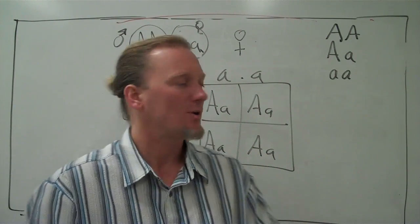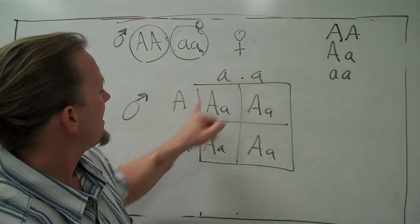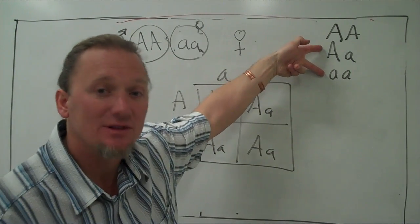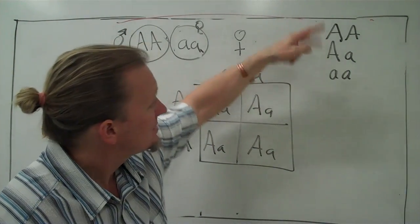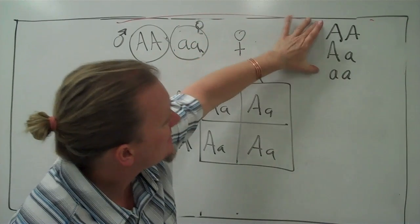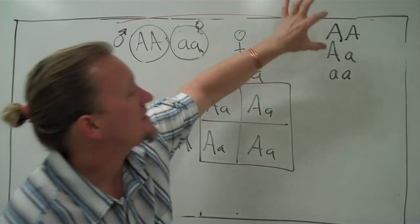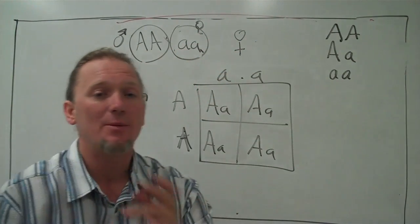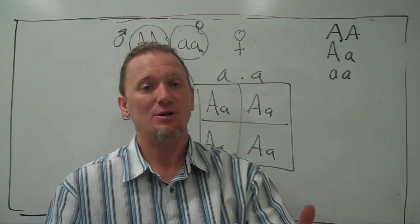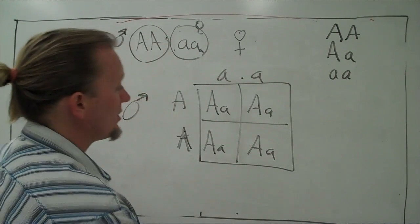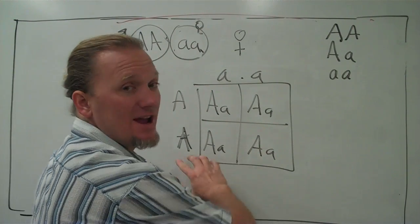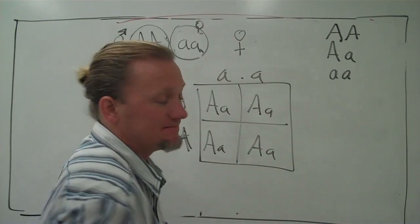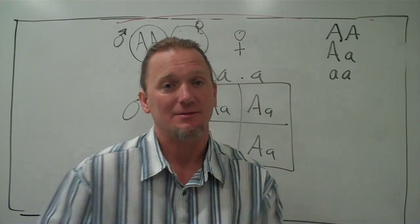That's the Punnett square. Try crossing big A little a with big A little a, and look at the phenotypes. Then cross the other combinations and look at how the offspring compare both in their phenotypes and genotypes. Good luck.